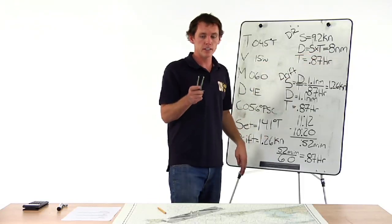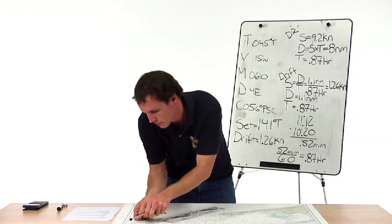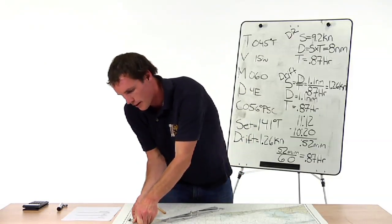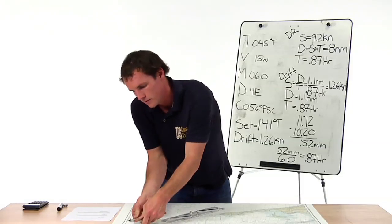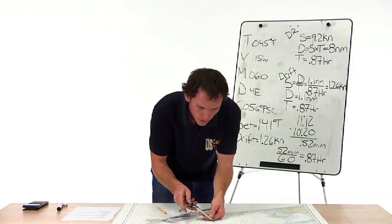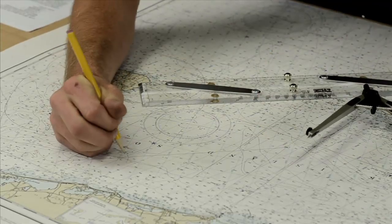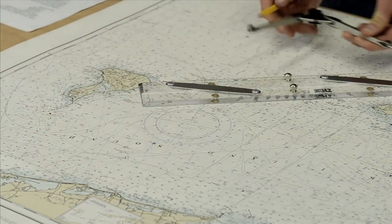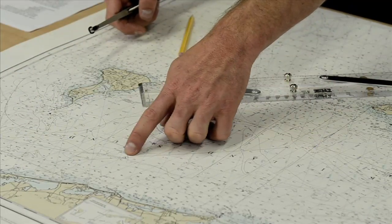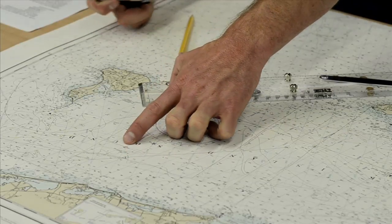We get 8 nautical miles on our dividers and come to the latitude scale to set 8 nautical miles. We go from our starting point 8 nautical miles down the dead reckoning line and mark it. So with no current, we would have traveled 8 nautical miles at 45 degrees true — but we actually ended up in a different position.